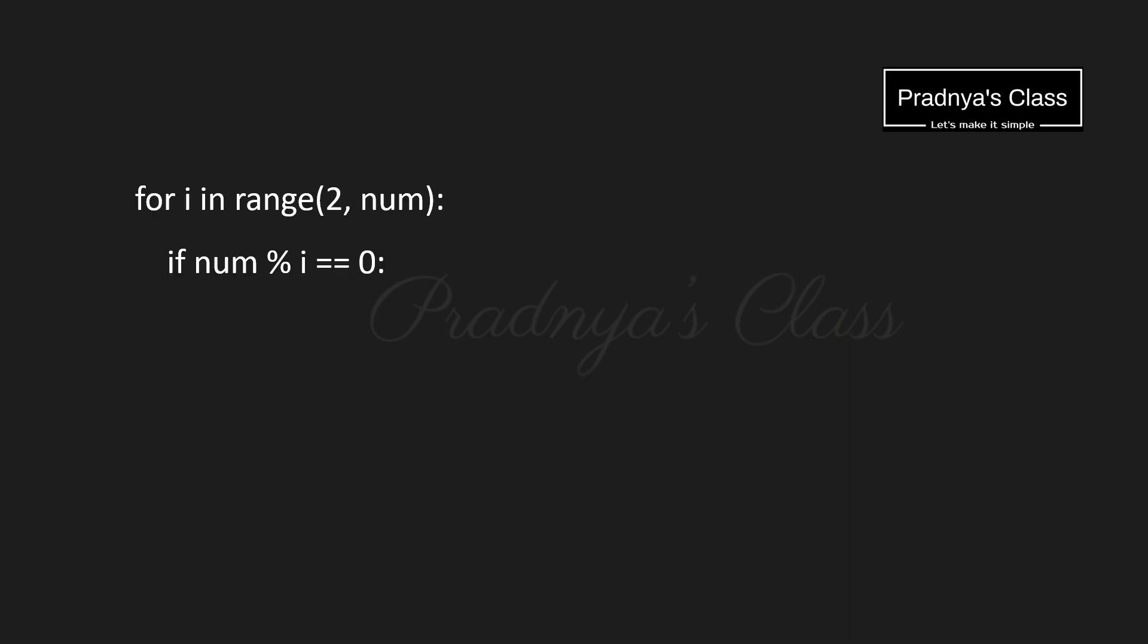Now how to write the code for the same, let's check out. We know the first step is to take the input, the input will be any number. Let's consider any number 5. We know that every number is divisible by one and itself. So we will start dividing it from 2 to 1 less than that number. It's a repetitive task, for that we will use a loop.